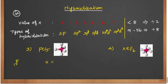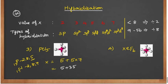Phosphorus has atomic number 15, so 2, 8, 5 — the outermost electron is 5. So 5 plus 5 into 7. Chlorine has atomic number 17, so 2, 8, 7. We get 5 plus 35 = 40. Dividing by 8, the x value is 5. So 5 means sp3d hybridization.